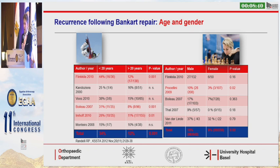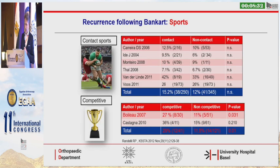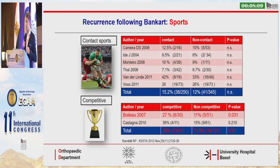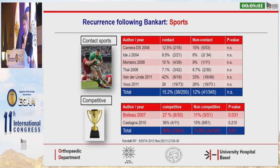Likewise, male patients have higher re-dislocation rates under a Bankart. Contact sport is a parameter within the ISIS score, as we all know. However, if you compile the evidence, the differences are not really significant. But still, I would say doing an arthroscopic Bankart in a rugby player — probably not such a good idea; I would be quite reluctant.